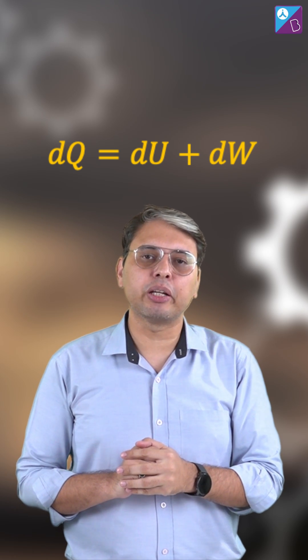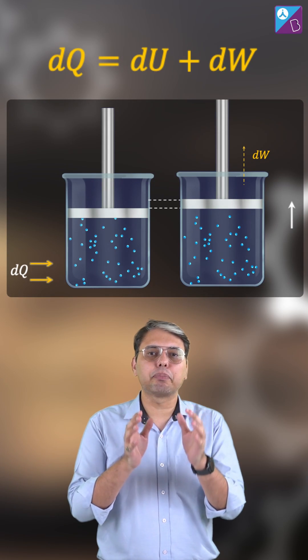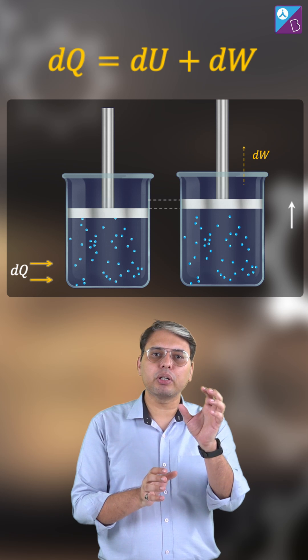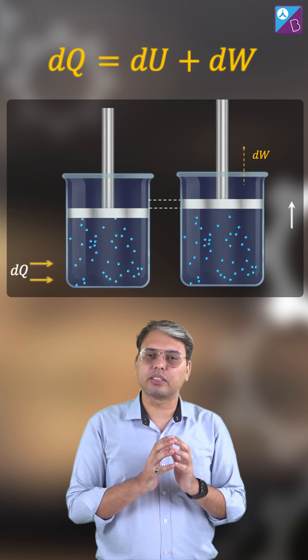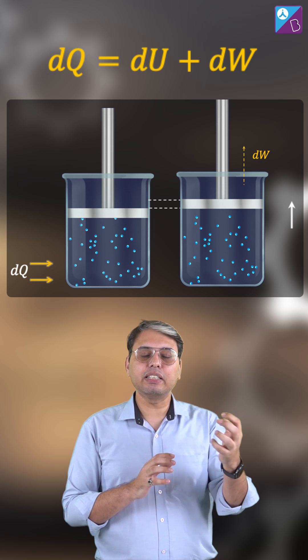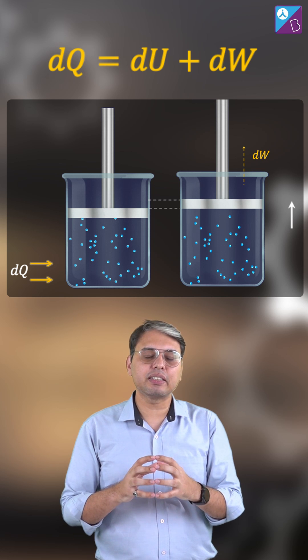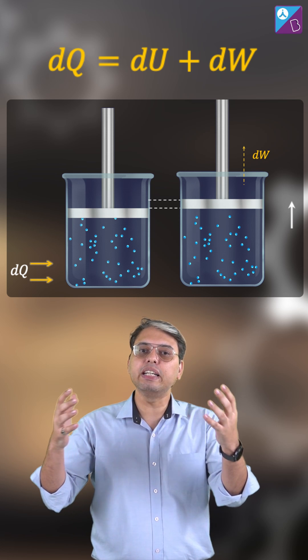According to the first law of thermodynamics, if some heat is supplied to a system, some part of that heat would be stored as internal energy of that system and some part of the heat supplied to the system would be used by the system to perform work on the surroundings.